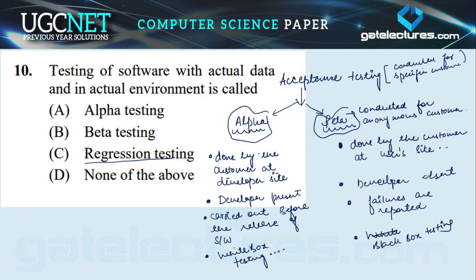Regression testing is something like maintenance testing — we test whether the system is working well after changes are made. Coming back to the question: testing of software with actual data in actual environment refers to the customer's site, such as when an application is launched and delivered to the customer. At the customer's site, actual environment and actual data are used, and the customer gives feedback. That's why the correct answer is beta testing, not alpha testing.